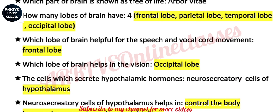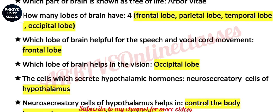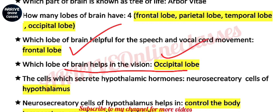How many lobes are there in the brain? The lobes are: frontal, parietal, temporal, and occipital lobe. Which lobe of the brain is helpful for speech and vocal cord movement? The answer is the frontal lobe. Which part of the brain helps in vision? The occipital lobe — the word occipital is always related with vision.